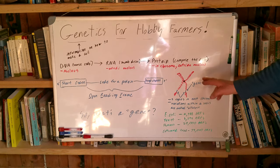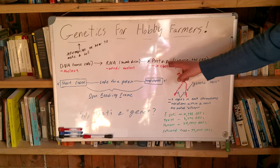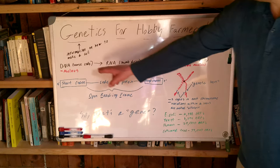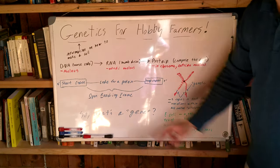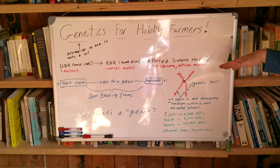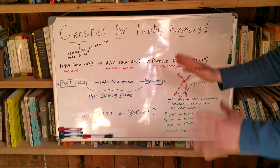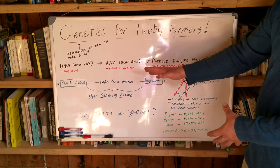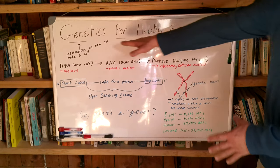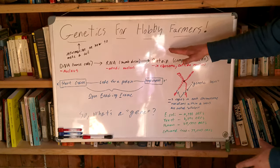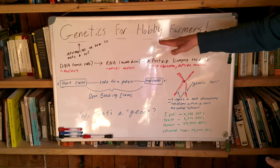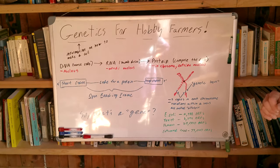All of those proteins are made on the ribosome from the RNA, which itself was made from the DNA. So this is the direction of flow of information. Yes, there's epigenetics, and yes, we're learning a whole bunch of other things about non-coding DNA — but this is genetics for hobby farmers, and this is what you need to know to be a good hobby farmer.